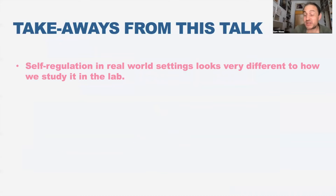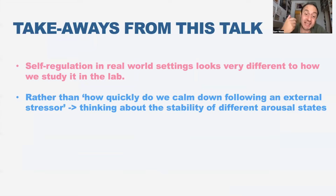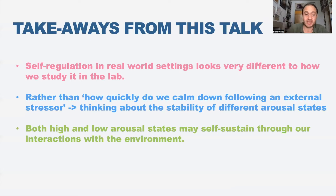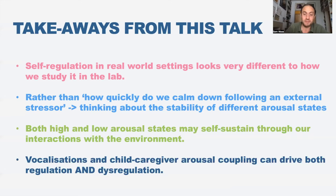What I'm going to try to persuade you in this talk is that self-regulation, when we measure it in real-world settings, looks very different to how we study it in the lab. Rather than thinking about how quickly a child calms down following an external stressor, I'm going to encourage you to think instead about the stability of different arousal states. Both high and low arousal states may not be self-regulated - they may in fact self-sustain. We become dysregulated through our interactions with the environment.